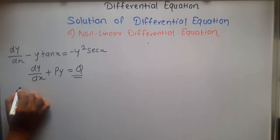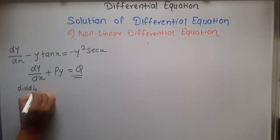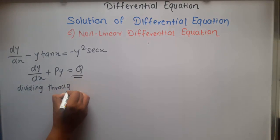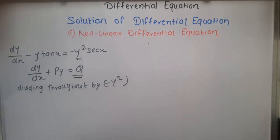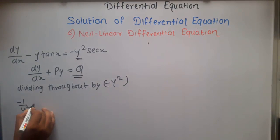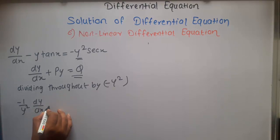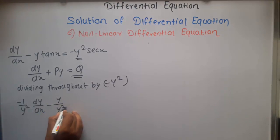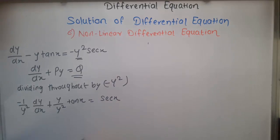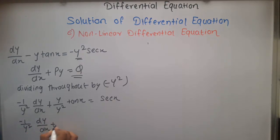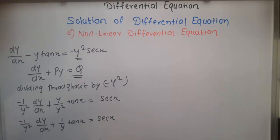We divide throughout by -y² (the term associated with Q). This gives: (-1/y²)(dy/dx) + (y / -y²)·(-tan x) = sec x, which simplifies to (-1/y²)(dy/dx) + (1/y)·tan x = sec x.